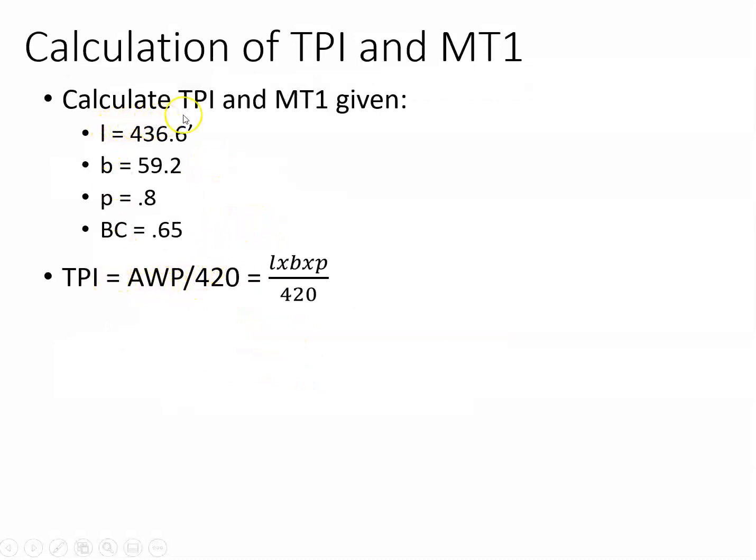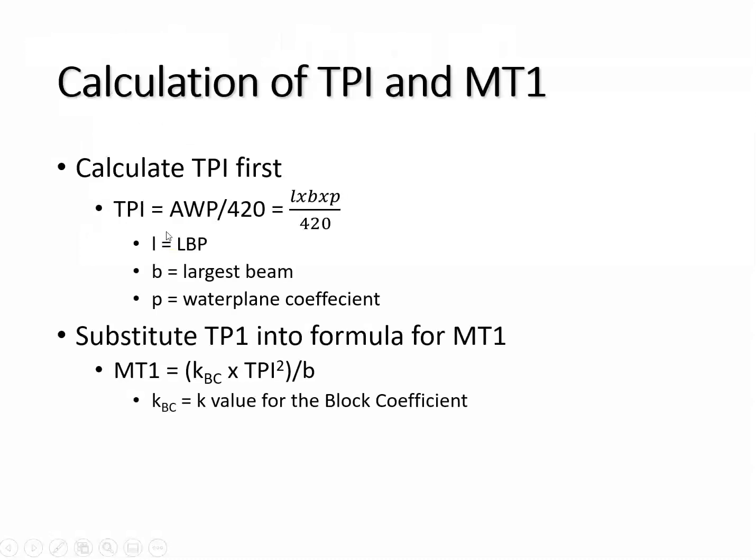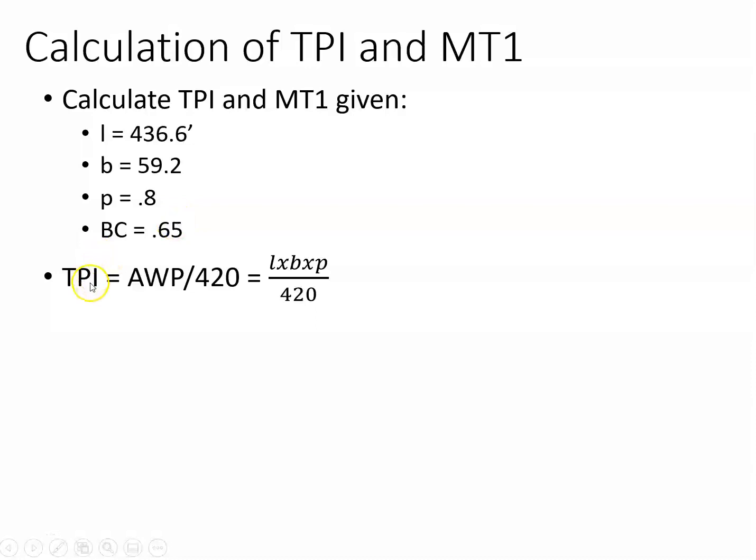If you're calculating TPI and moment to trim an inch given L, B, P, and block coefficient, I'm going to need these three to calculate TPI and I'm going to need that one for my MT1. TPI is area of the water plane divided by 420. That's L, B, times P. If I do that, 436 times 59.2 times 0.8 divided by 420, it gives me 49.2. That's 49.2 tons. If you add 49.2 tons on the vessel at that point, you'd sink it by one inch.